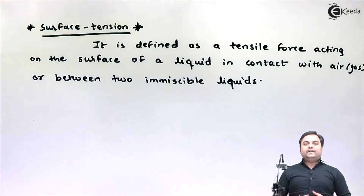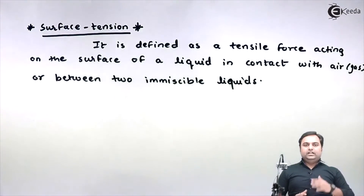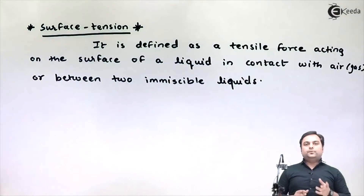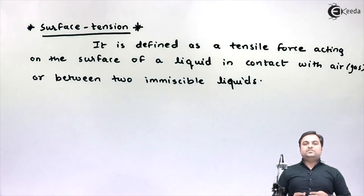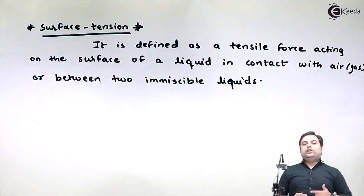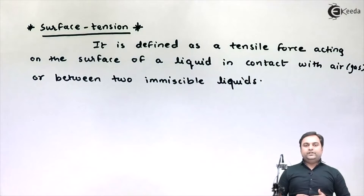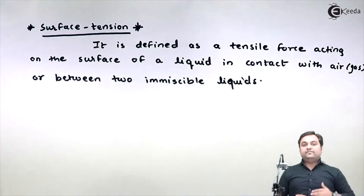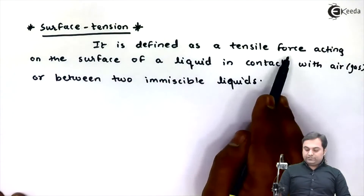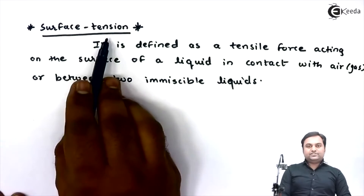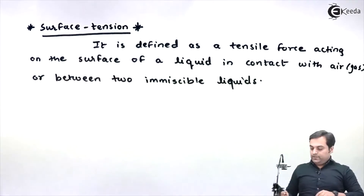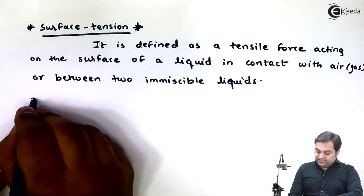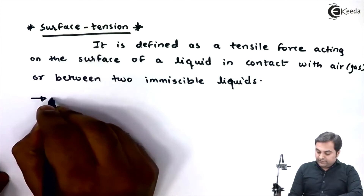Surface tension can exist between a liquid and gas, or between two immiscible liquids. For example, if one liquid is floating over another liquid, at the surface we have some tensile force, and that tensile force is called surface tension. Surface tension is denoted by the letter sigma.